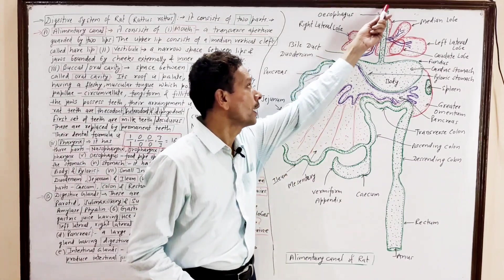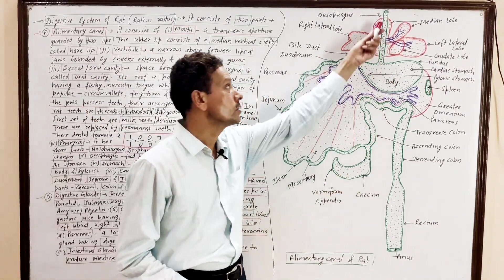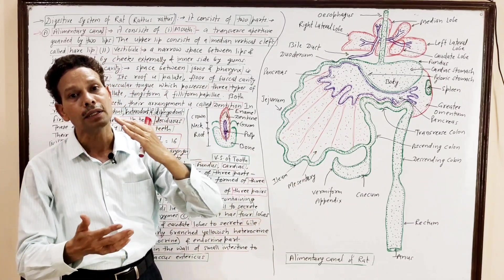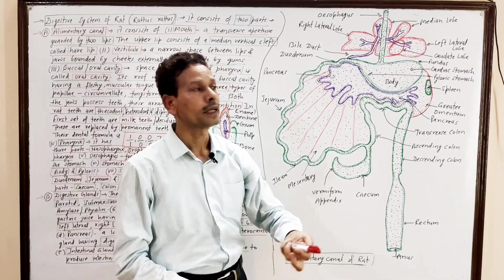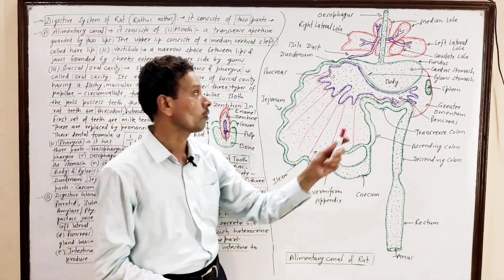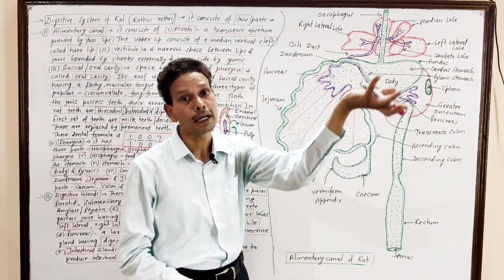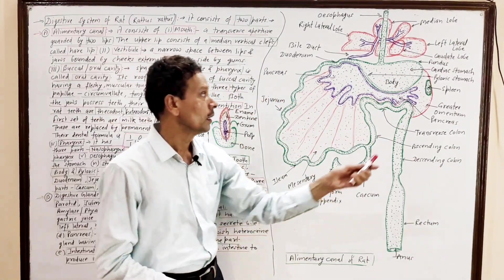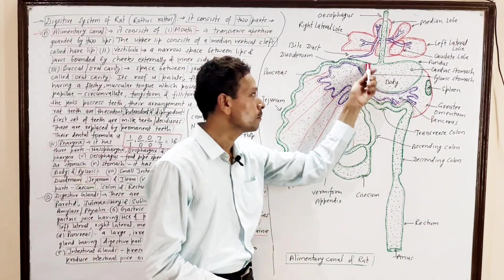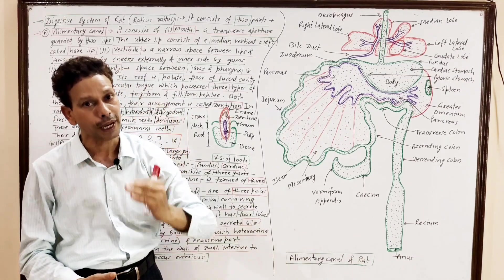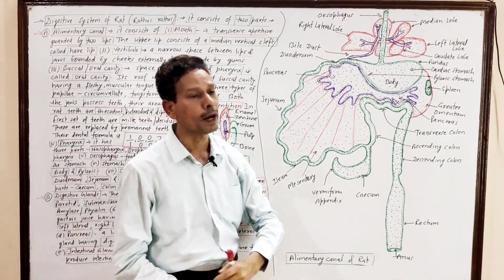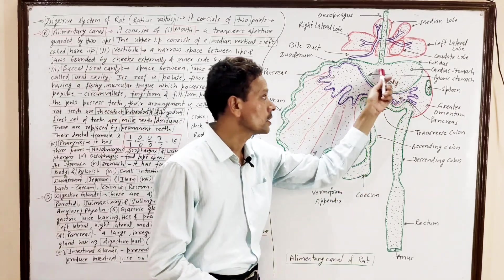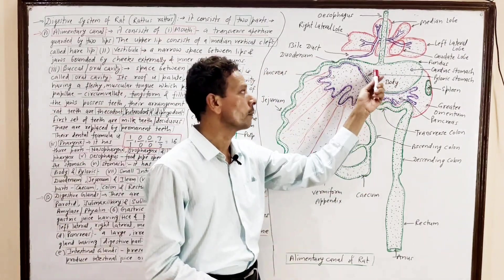The next part is the esophagus — the food pipe. The esophagus opens into the widest part of the alimentary canal, that is the stomach. The stomach, or gaster, has four parts: the fundus, which is the upper part containing gases; the cardiac stomach, which lies near the heart; the body, which is the main part; and the pyloric stomach, which is the posterior part.